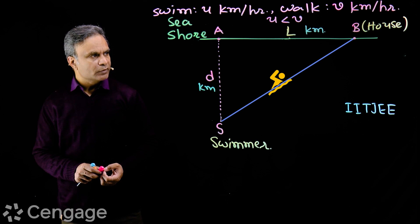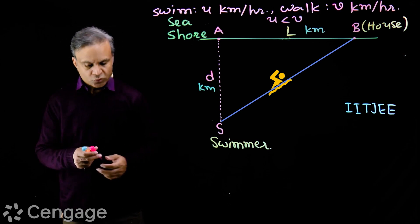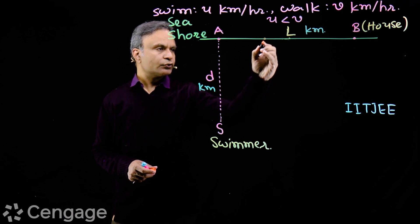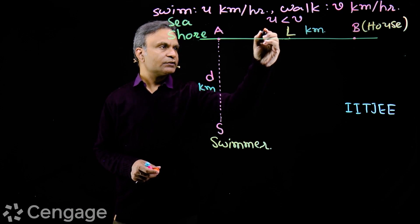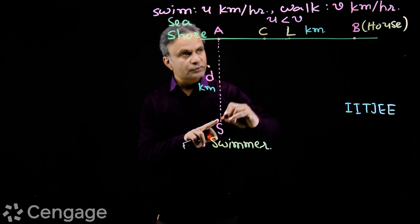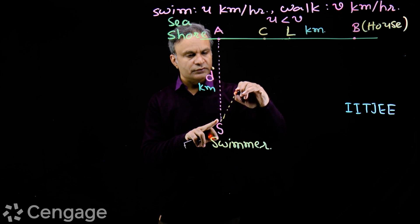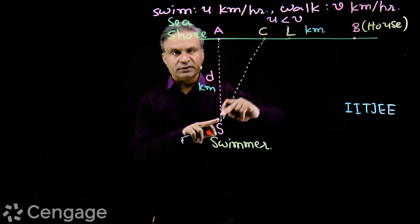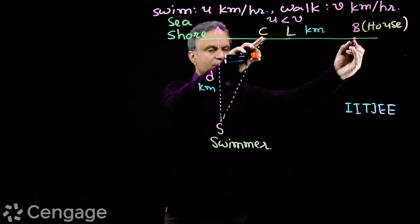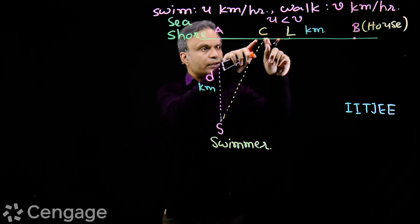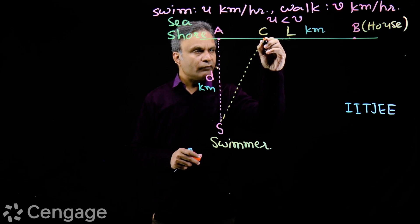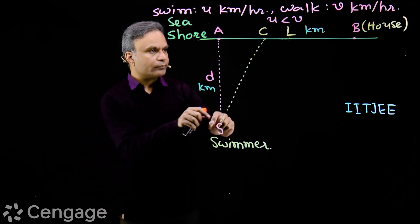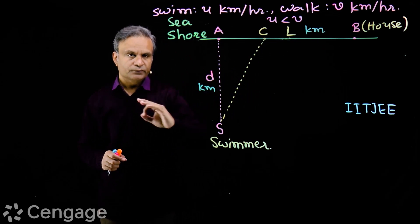For the shortest time, he will land somewhere on the shore — suppose at point C. We introduce a variable: suppose the distance from A to C is x kilometers, then the distance from C to his house is L minus x kilometers. He swims this much distance and then walks this much distance, but we do not know where point C is. We want to find this point such that the time taken to reach home is the least.